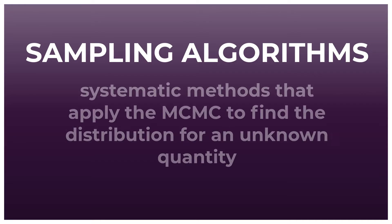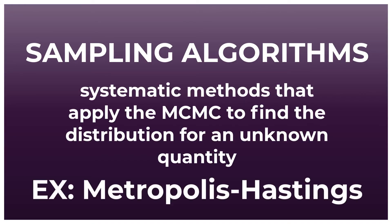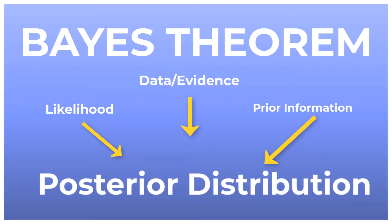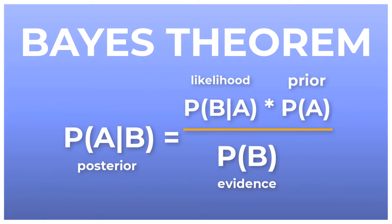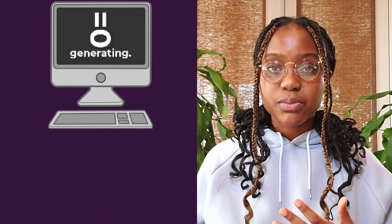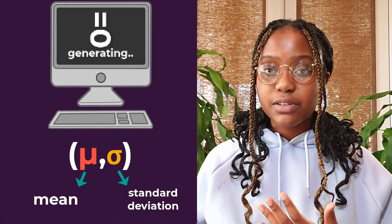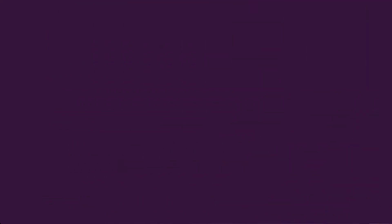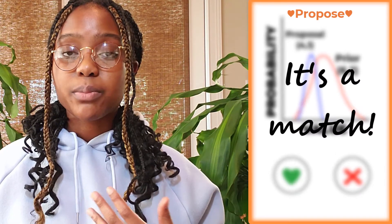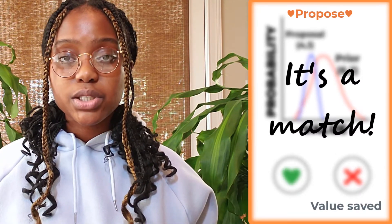To fit these curves, we can use a sampling algorithm like the Metropolis-Hastings algorithm. Sampling algorithms use Bayes' theorem, which allows them to update the probability of an outcome by using new evidence. First, the computer analyzes our data. Then, it randomly generates a proposal distribution made up of a mean and standard deviation for our parameter of interest. The computer will choose whether to reject or accept the proposal distribution. Accepted distributions will count towards the estimated value of our parameter, but rejected distributions will not.